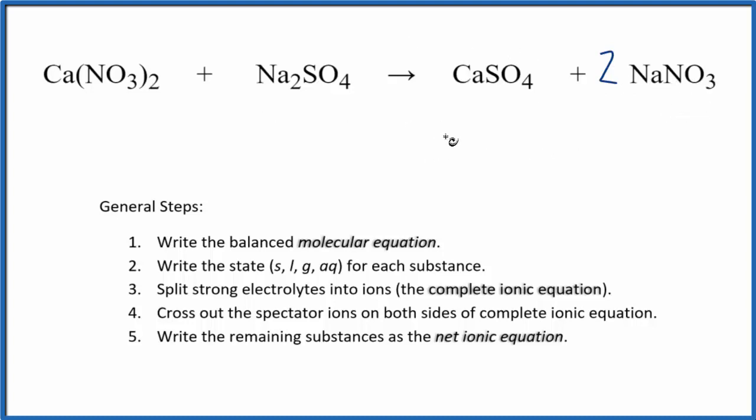So we have a balanced molecular equation. Then we need to write the states for each of the substances. Calcium nitrate, when we put that in water, it's very soluble. Nitrates are soluble, so that's going to be dissolved in water (aq). And then sodium compounds as well are very soluble, so we're going to put an aq there. We kind of expect our reactants to be soluble anyway.